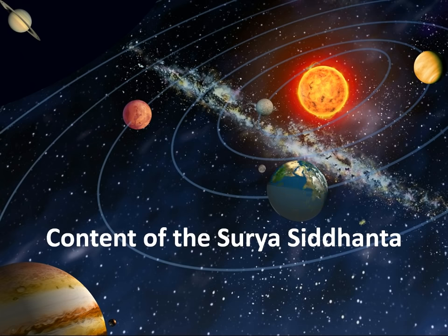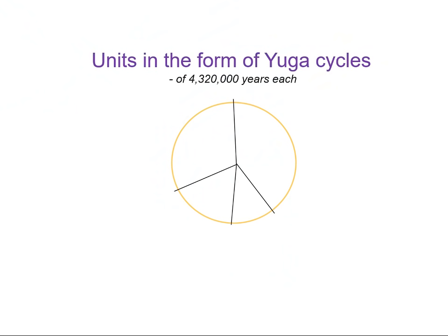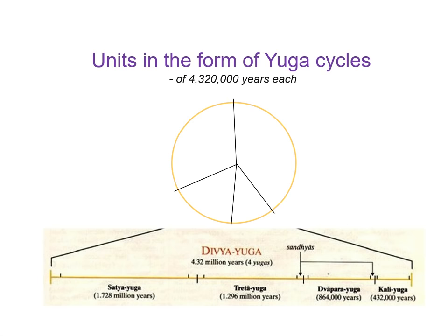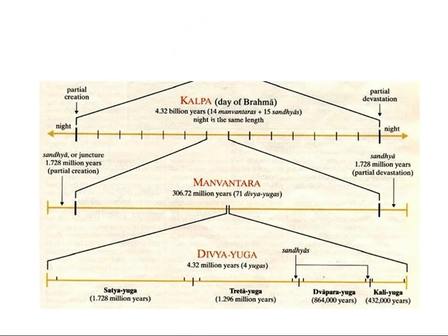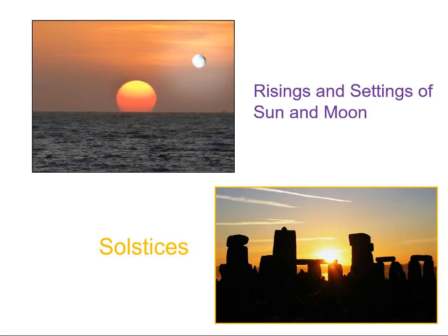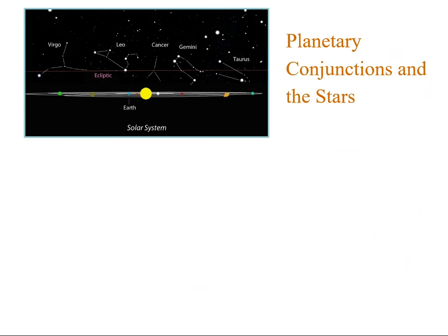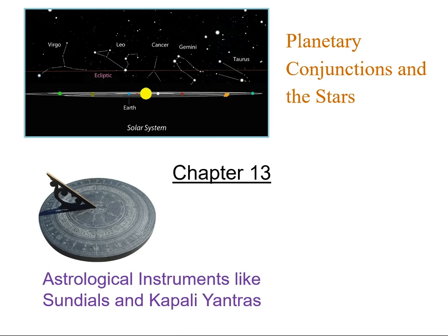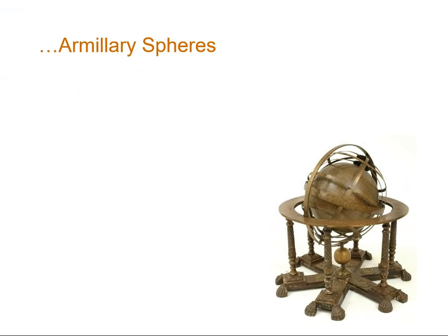Let's look at the content of the Surya Siddhanta in summary. It uses units in the form of Yuga cycles, each cycle about 4,320,000 years each. These cycles, called Diva Yuga cycles, are smaller parts of even larger periods of time, going up to generally as far as Ekalpa — a day of Lord Brahma — which is 4.32 billion years long. The Surya Siddhanta also explores risings and settings of the sun and moon, solstices, planetary conjunctions, the stars, and astrological instruments like sundials, kapiliyantras, and armillary spheres.